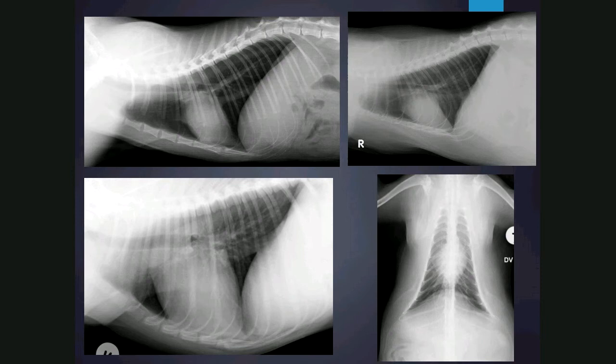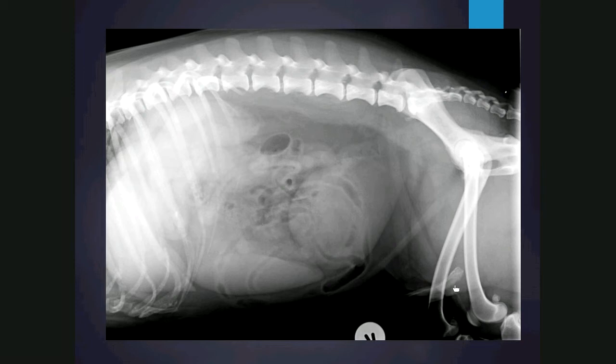In this lateral view of the abdomen, there are two things that tell us it is a male canine: the presence of the os penis, and a round soft tissue structure in the caudal abdomen which is the prostate. Note how this patient is skeletally mature because we don't see any radiolucent open physis in areas where we might expect them in a younger animal.